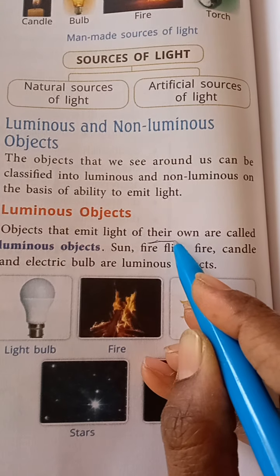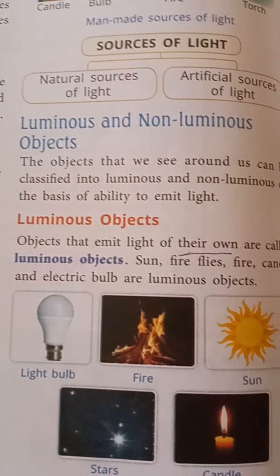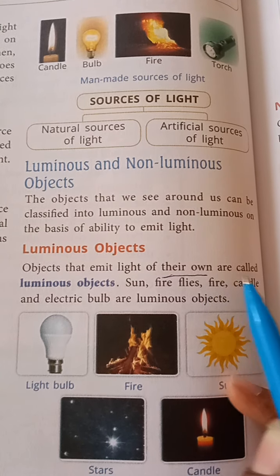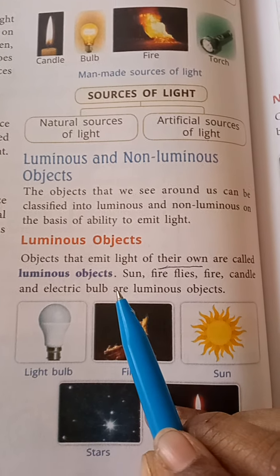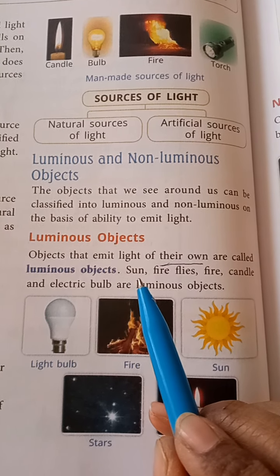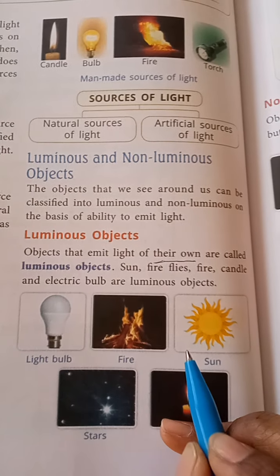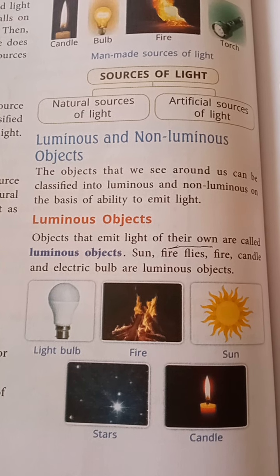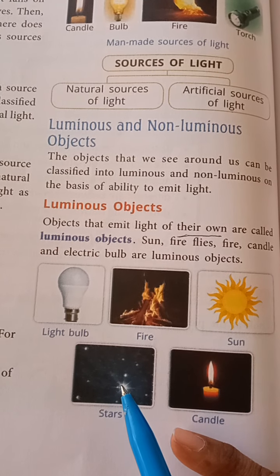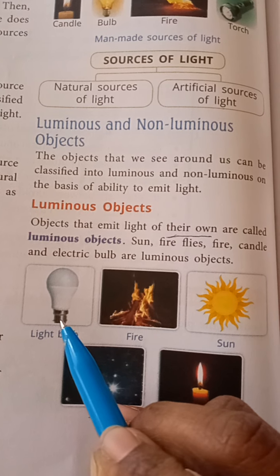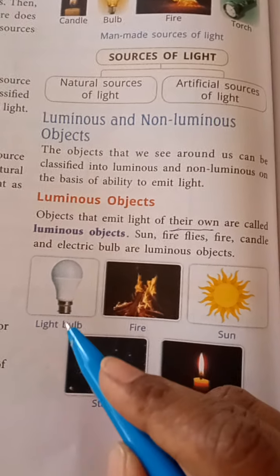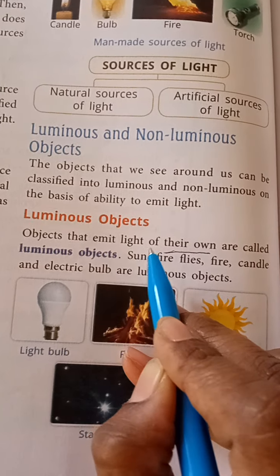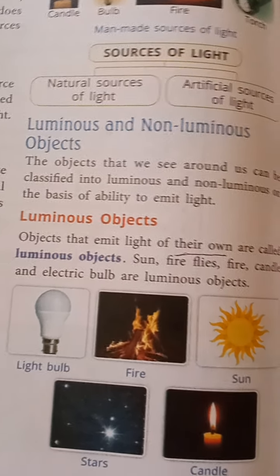Objects that emit light of their own are called luminous objects. Examples of luminous objects include the sun, fire, candle, stars, and electric bulb — any electric things that emit light. That is the definition: objects that emit the light of their own are called luminous objects.